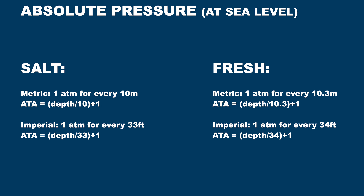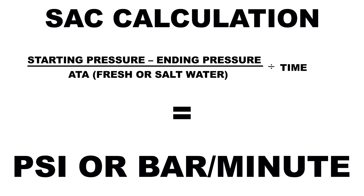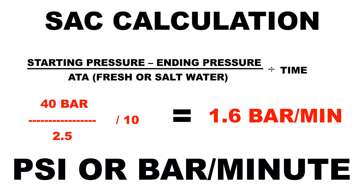The equation for SAC in pressure per minute is very simple. When doing calculations that involve absolute pressure, you need to calculate them correctly — know whether you're in salt water or fresh water and use the correct conversion units to find your absolute pressure. Basically, take your starting pressure, subtract your ending pressure, divide by the absolute pressure at your depth, and finally divide by the length of the test. For example, say you use 40 bar while swimming at 15 meters for 10 minutes in salt water. The absolute pressure at 15 meters in salt water is 2.5. Plug all of that into the equation and you get 1.6 bar per minute at the surface. Remember, this is cylinder dependent — you cannot compare it to any cylinder.